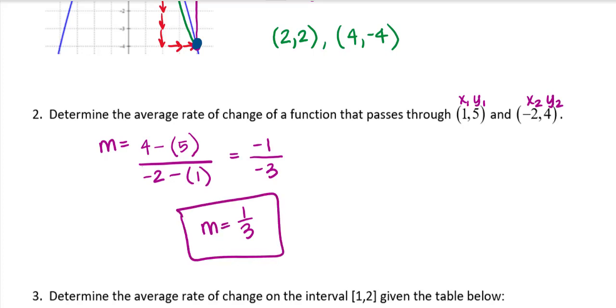This is positive. So if I plotted those two points, just on a Cartesian plane here, 1, 5 would be about right here. And negative 2, 4 would be about right here. So I should see that that's a positive slope connecting the two points.